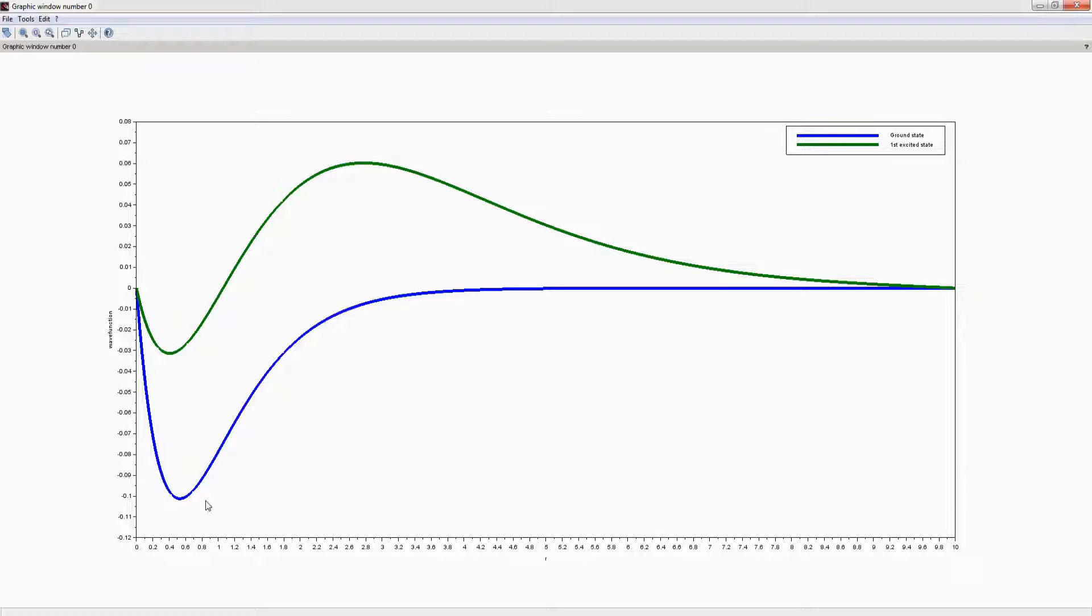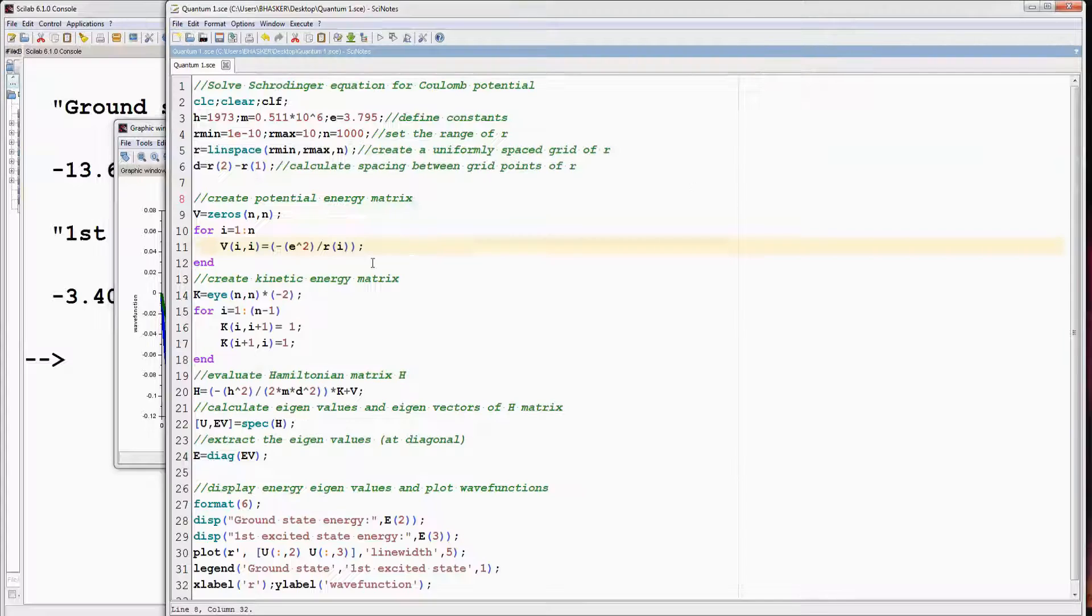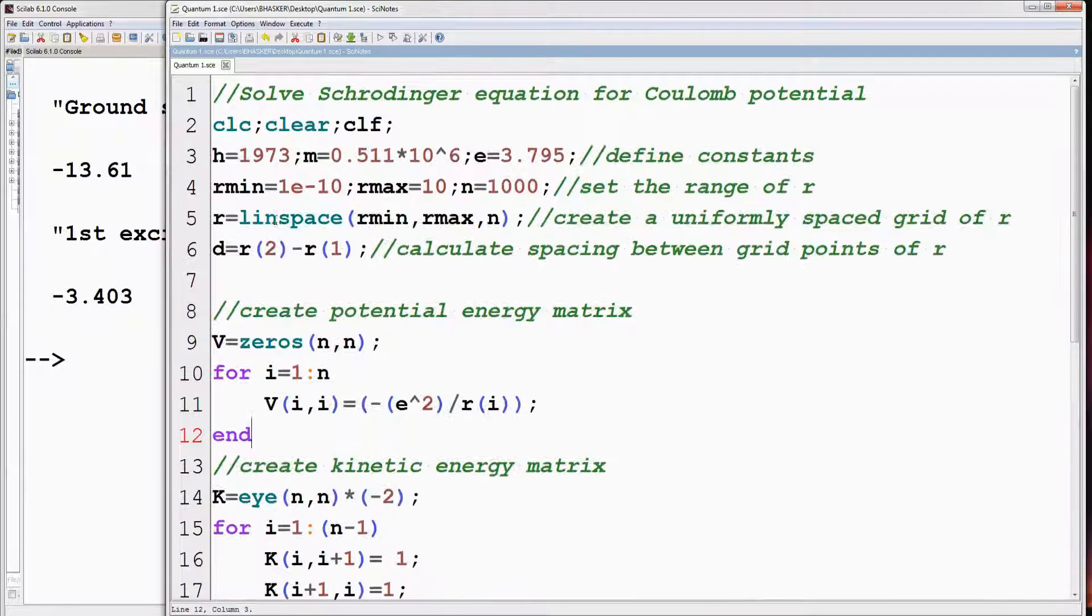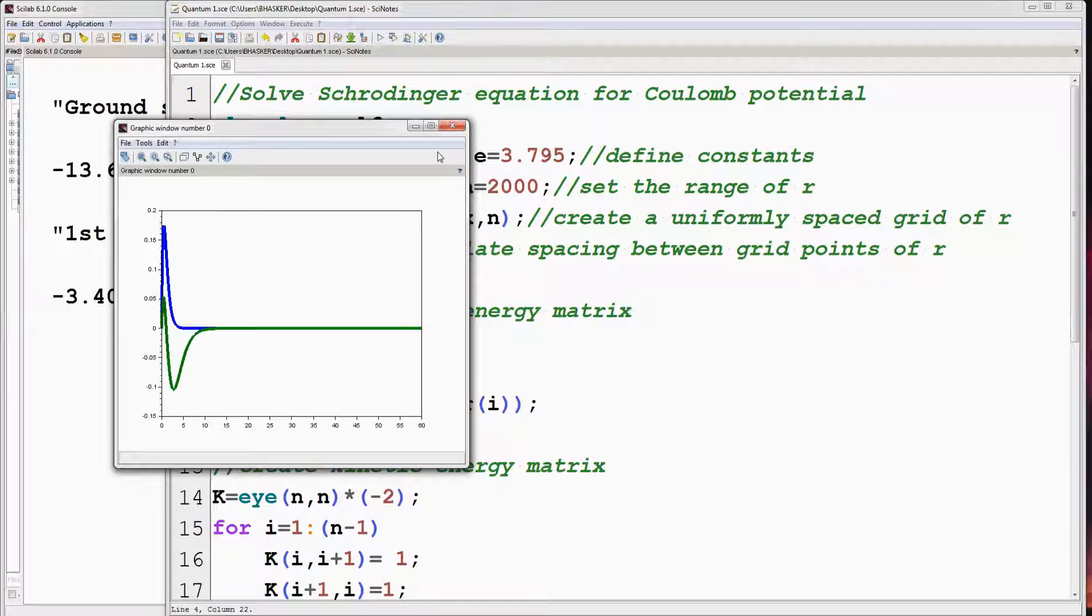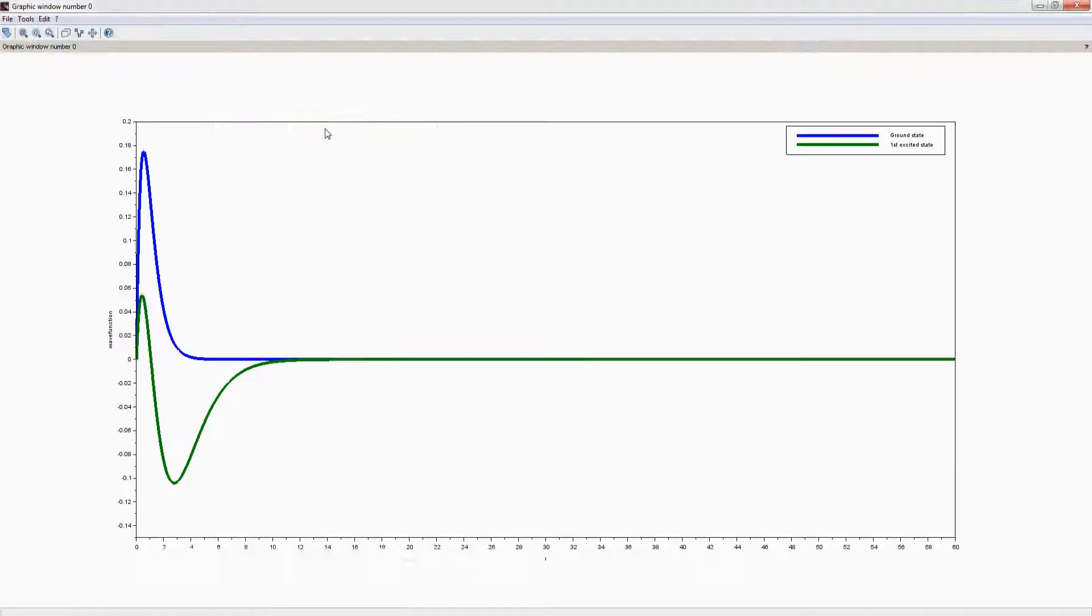Actually both the ground state and first excited state wave functions are inverted. Now we can rectify this by increasing r max to say 60, and since we have increased the range of r, increase the value of n to say 2000. Let's run the program again. Okay, so now energy eigenvalues and the corresponding eigenfunctions both are okay.